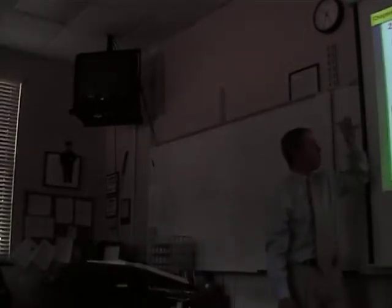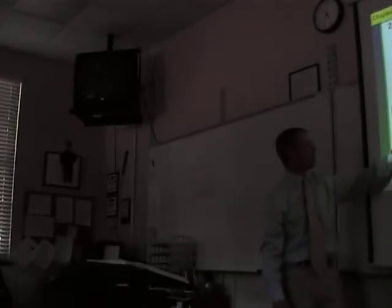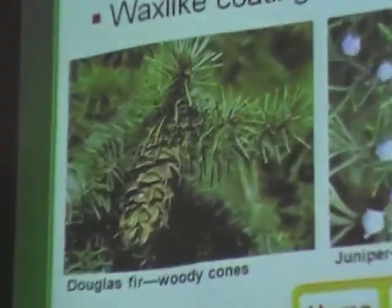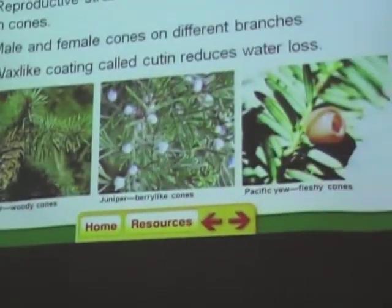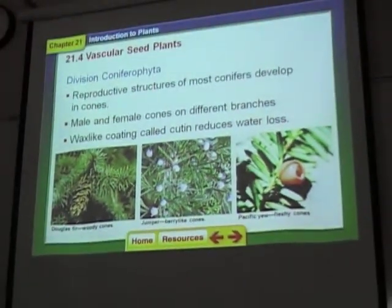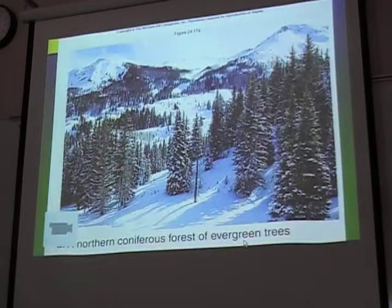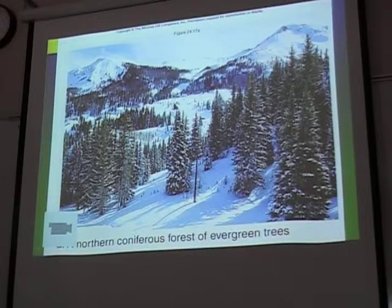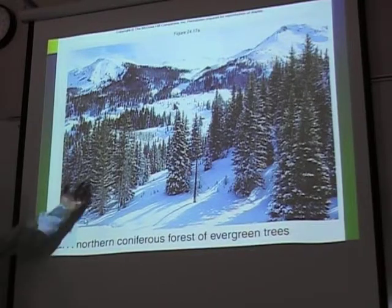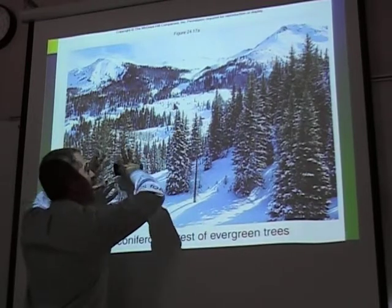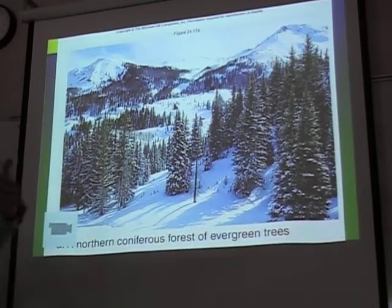Not all of the cones are woody cones like on a pine tree or fir tree. Some of them have berry-like cones, and some have fleshy cones. But all the cones do the same thing — they produce pollen grains or eggs that can get fertilized and form seeds. Once you get one tree growing, it'll drop seeds, more trees will grow around that, and over several thousands of years you form a huge forest that way.